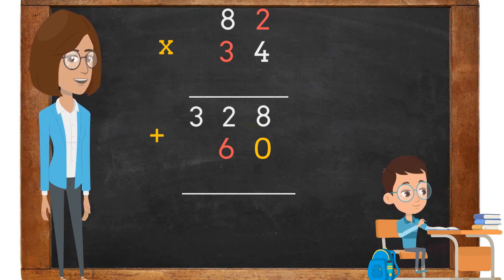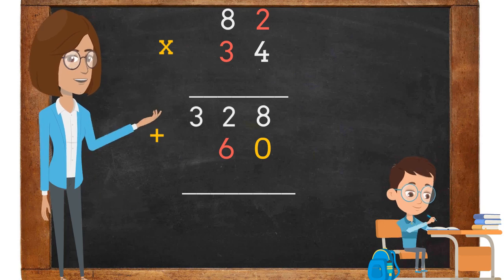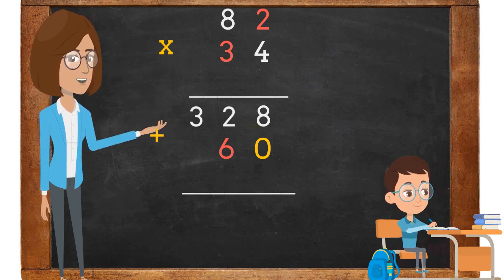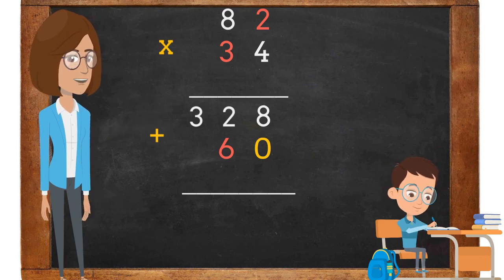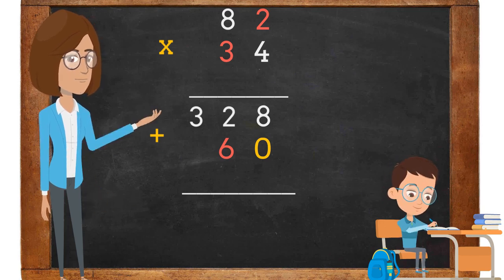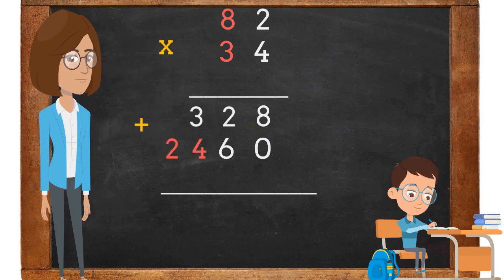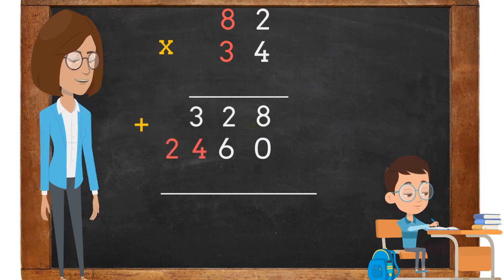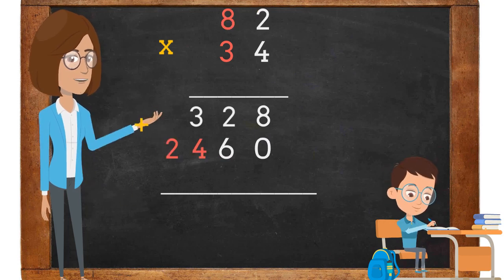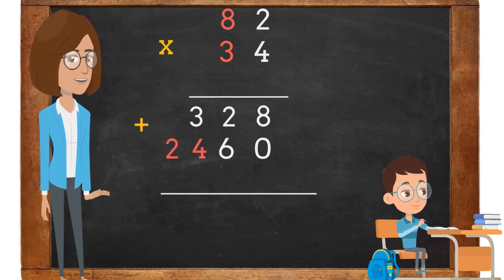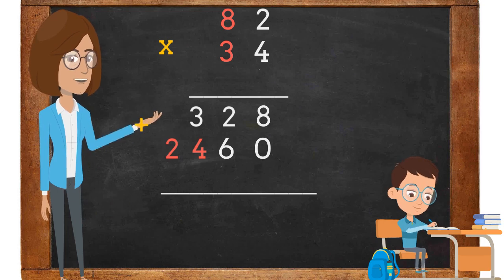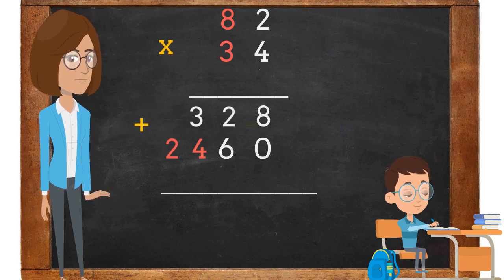The 6 is placed in the tens place, next to the 0. The fourth step is to multiply 3 times 8. 3 times 8 is 24.